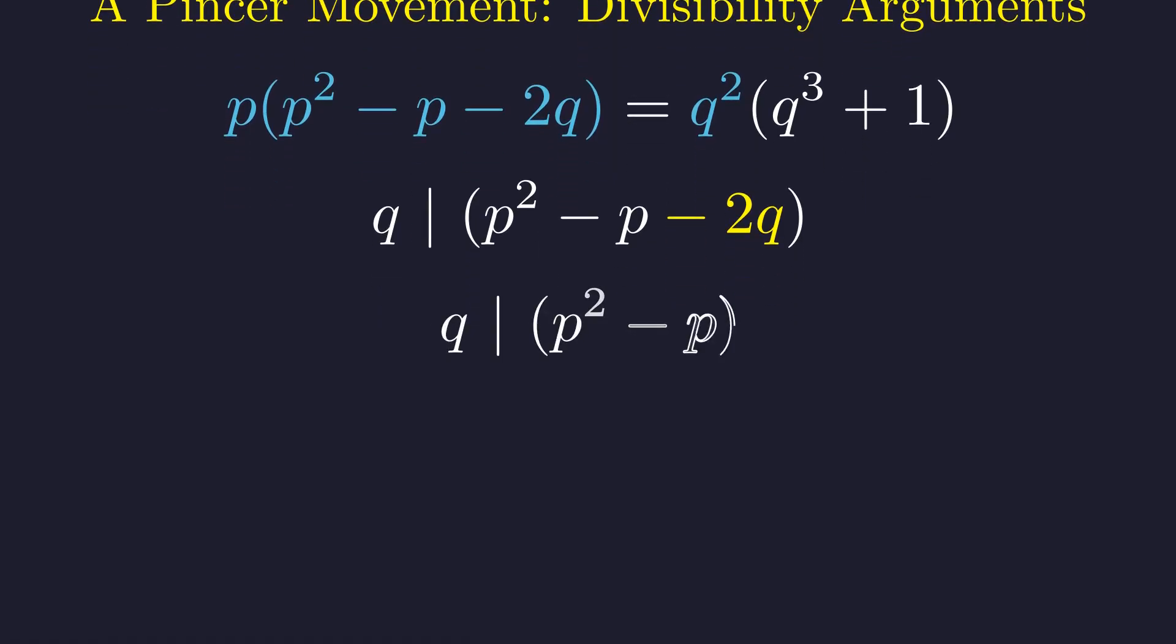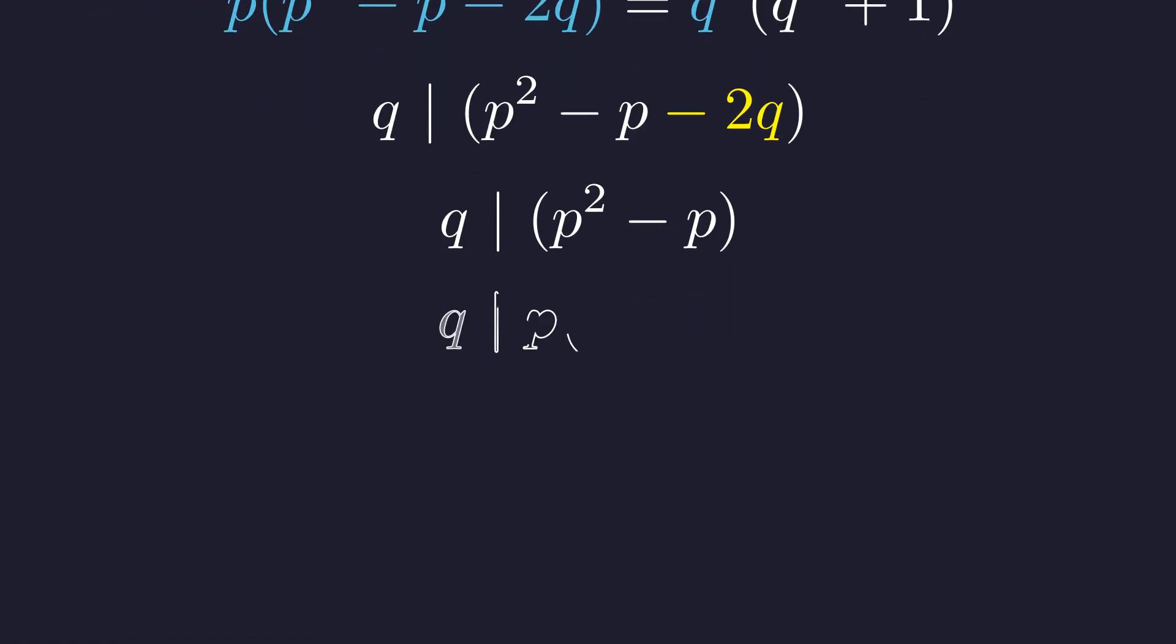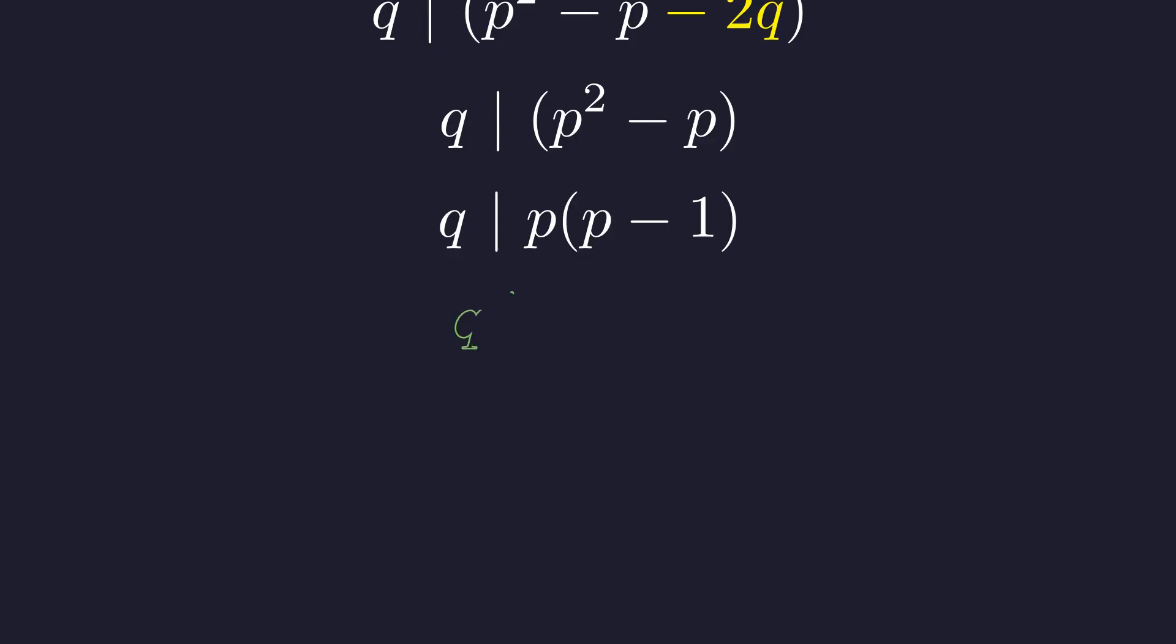This leads to the conclusion that q must divide p squared minus p. Factoring out p shows that q must divide p times the quantity p minus 1. As p and q are distinct primes, q cannot divide p. Therefore q must divide the factor p minus 1. This is our first major constraint.